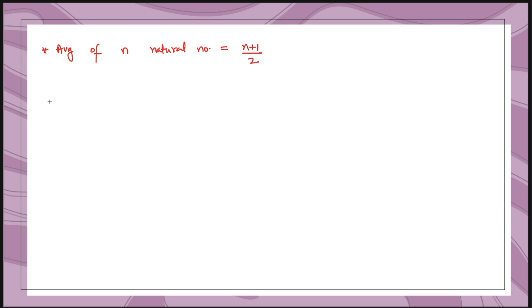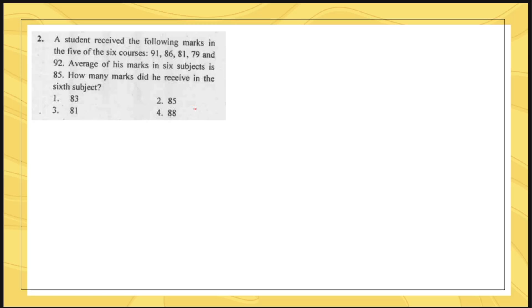There are also certain general formulas to know. The average of n natural numbers is given by (n + 1) / 2. The average of even numbers is given by (n + 1), where n is the number of even numbers. These are formulas you should know, and based upon these we will be solving questions.